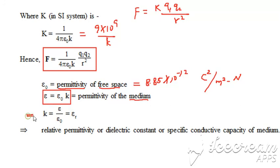From here we can write K is going to be equal to epsilon upon epsilon naught, which is also written as epsilon R. Epsilon R is relative permittivity. So this K is known as relative permittivity. This is also known as dielectric constant, and also known as specific conductive capacity of the medium. It is influenced by charge.